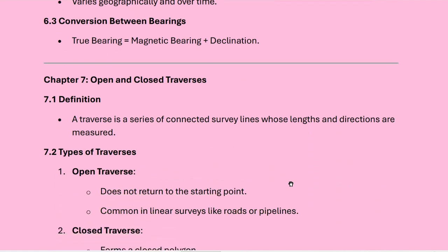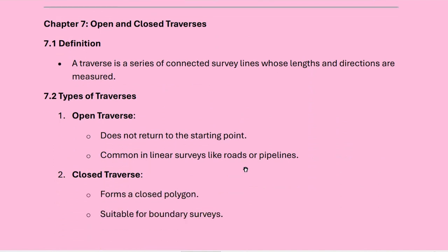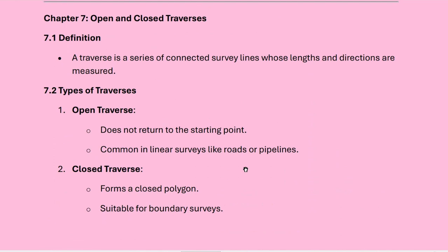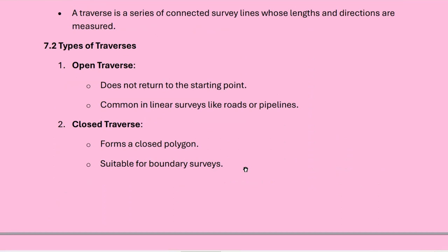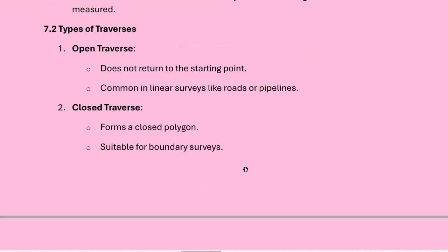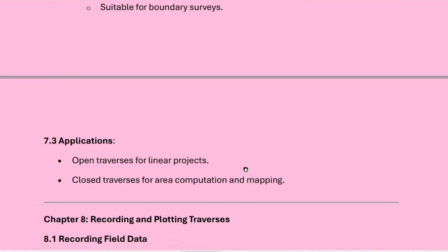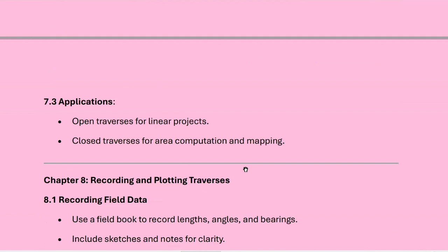Now come to the next topic: open and closed traverses. A traverse is a series of connected survey lines whose lengths and directions are measured. There are two basic types: open traverse and closed traverse. An open traverse does not return to the starting point and is common in linear surveys like roads and pipelines. A closed traverse forms a closed polygon and is suitable for boundary surveys. Open traverses are used for linear projects, whereas closed traverses are used for area computation and mapping.